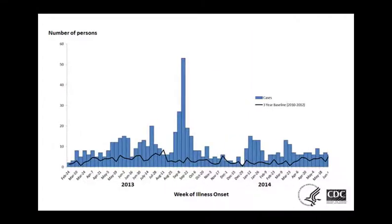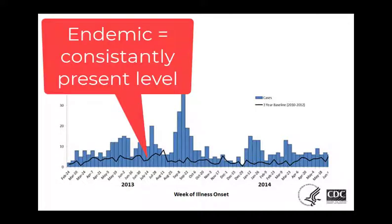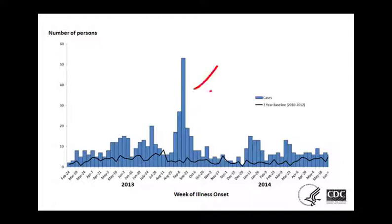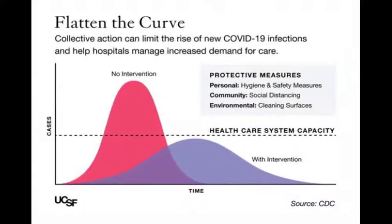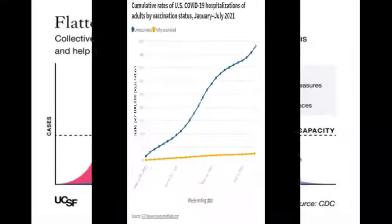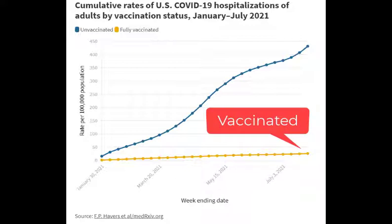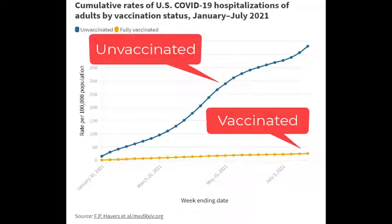Epi curves can provide other useful information too. For example, if a disease is endemic, that means that there's usually some number of cases within the population. If a graph shows that there's a steep increase above that expected endemic level, it would indicate that an outbreak is occurring. Or you may have seen these graphs used to describe why precautions are important during a pandemic to prevent overwhelming the healthcare system — for a while, the headlines were all about flattening the curve. Or you may now be seeing these graphs used to demonstrate that vaccination can help drastically reduce the likelihood that you're going to end up in the hospital if you do get COVID-19.